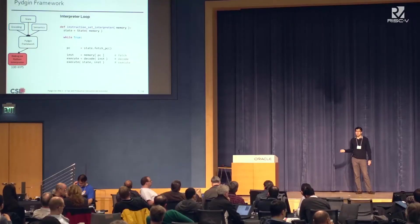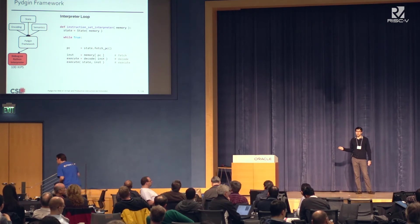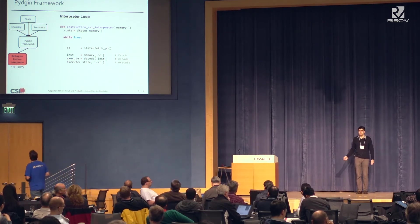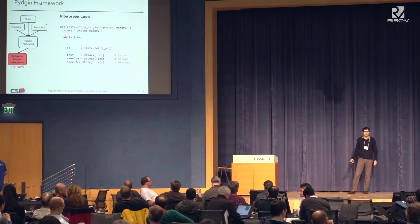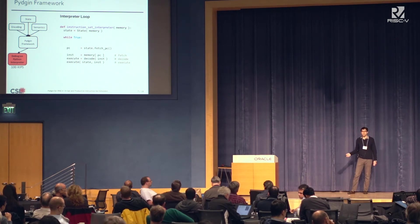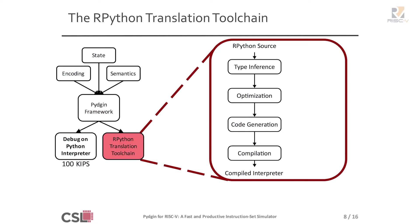Running on a Python interpreter is not very fast — we typically get hundreds of thousands of instructions per second, around 100 KIPS. However, this is super useful for debugging, for instance for assembly tests. Pigeon is designed to be used with the RPython Translation Toolchain developed by the PyPy community.